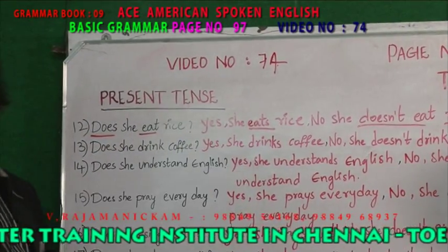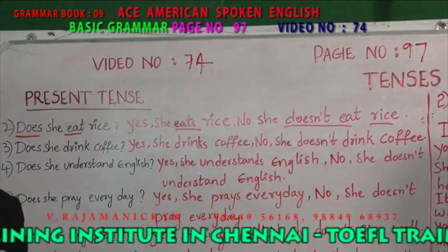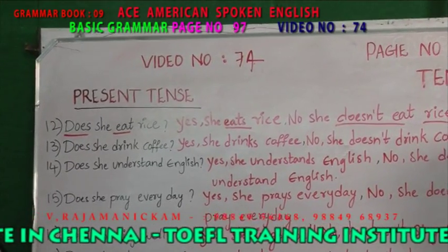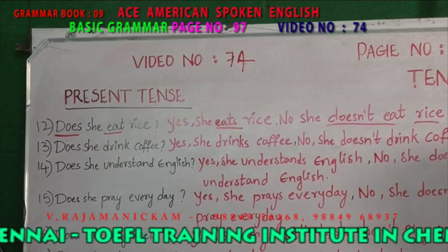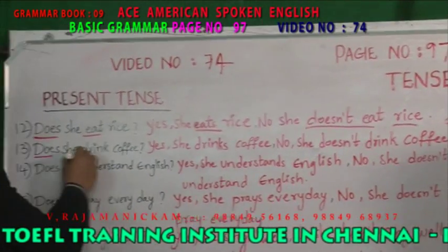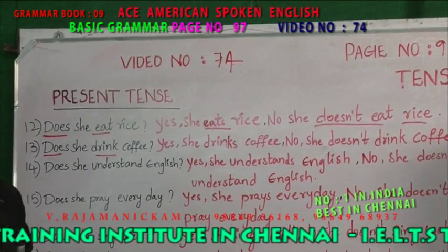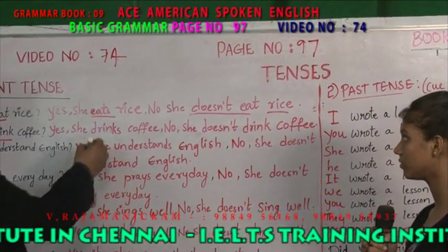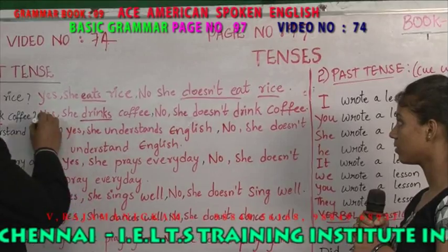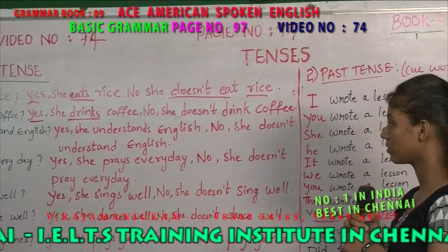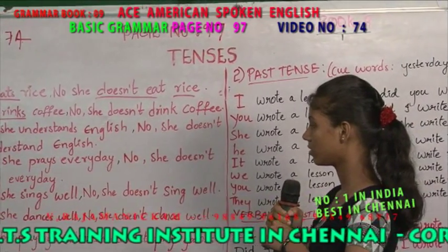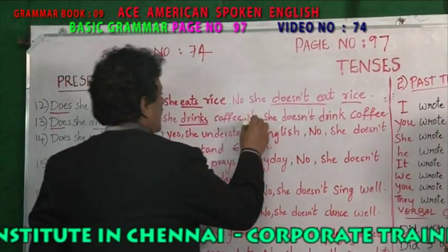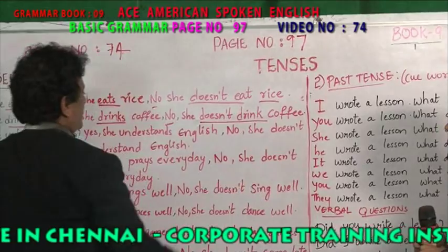Their answer comes in present tense. Second question, thirteen: does she drink coffee? The verb is in present tense — doesn't drink. The answer: yes, she drinks coffee. Drinks is present tense. If negative: no, she doesn't drink coffee.